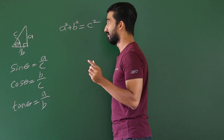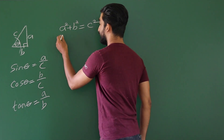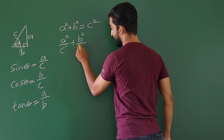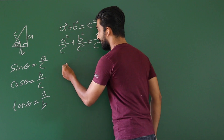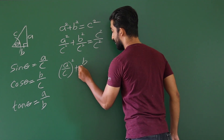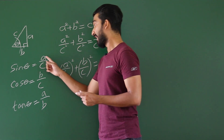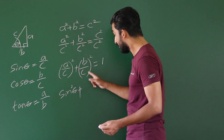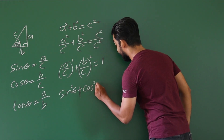Now just for a mathematical purpose, we'll divide everything by c². So it becomes a²/c² + b²/c² = c²/c². Now a²/c² can be written as (a/c)², and b²/c² can be written as (b/c)², and c²/c² equals 1. Now, if a/c is sin theta, then (a/c)² means sin²θ. If b/c is cos theta, then (b/c)² means cos²θ, giving us sin²θ + cos²θ = 1.